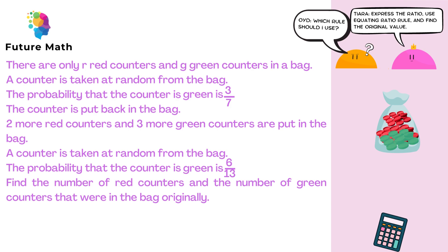Two more red counters and three more green counters are put in the bag. A counter is taken at random from the bag. The probability that the counter is green is 6 over 13. Find the number of red counters and the number of green counters that were in the bag originally.